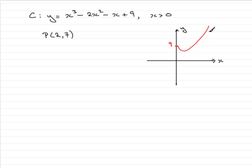Now it doesn't really matter if you can't sketch the graph. This is only done just to give you an idea of what's happening. So we've got to find the equation of the tangent at the point P (2,7).